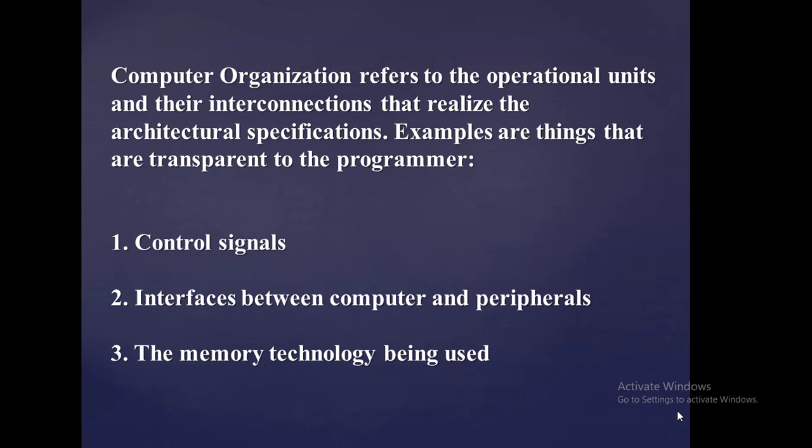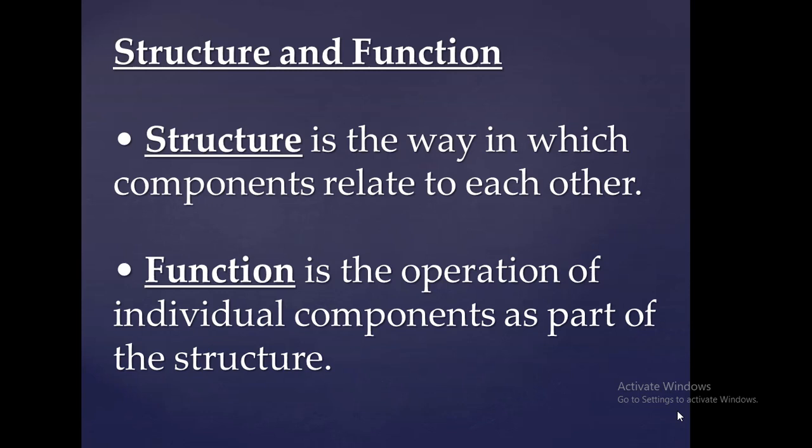So that we really understand these two terms and how they are integrated with one another, we have the structure and the function. A computer is a system that has a specific objective and contains so many electronic components, and this system can be divided into two areas: the structure and the function. The structure is the way in which the components are interrelated, and the functions are the operation of each individual component as part of the structure.